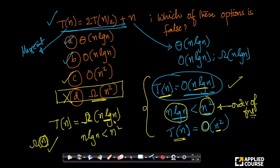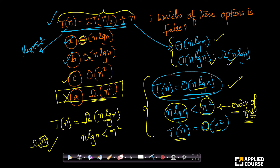This problem is about the concept of order of functions and applying it in a problem setting. This is basically a merge sort recurrence, so you should be able to infer the correct asymptotic bounds. You have to be careful to understand these nuances of Theta, Big O, and Big Omega notation to answer questions like this.